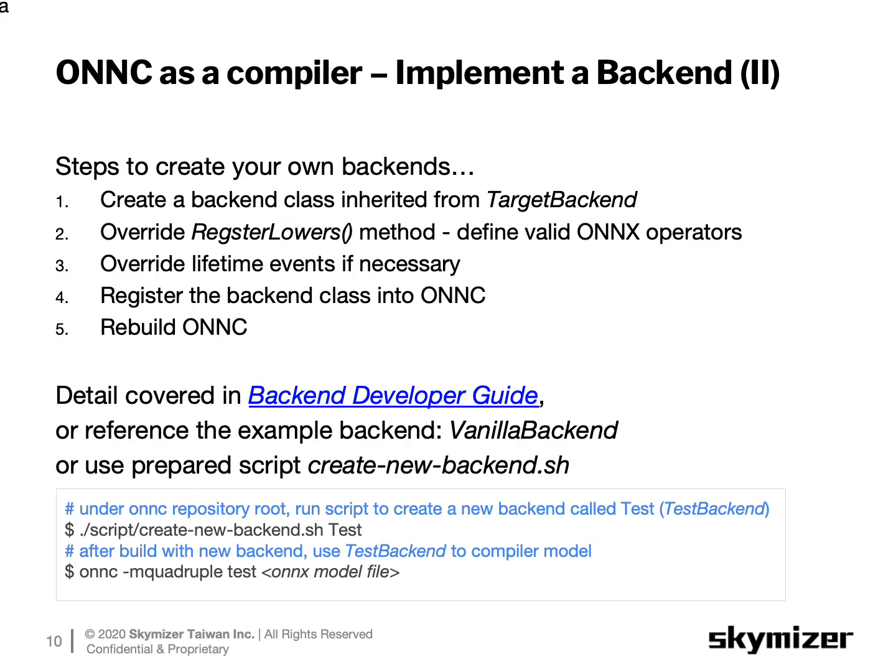This slide lists all the steps needed to create a new backend. First, write a subclass of the target backend class and override registerLowers to define legal ONNC IR. Next, override lifetime events to get expected behavior and register the backend class into ONNC — this allows users to choose the backend through a command line option. Finally, recompile the ONNC binary. More details are covered in ONNC tutorial lab 3. The fastest way is to use the create-new-backend script, which takes one argument used to name the backend class in C++ source code; use a lowercase name to select the backend during compilation.